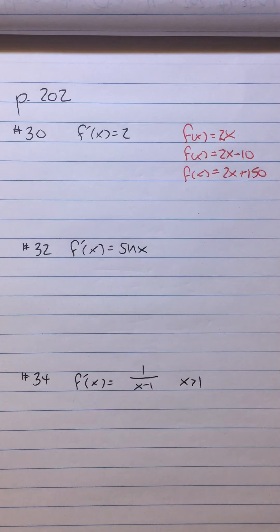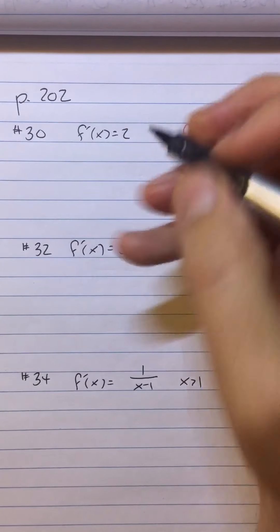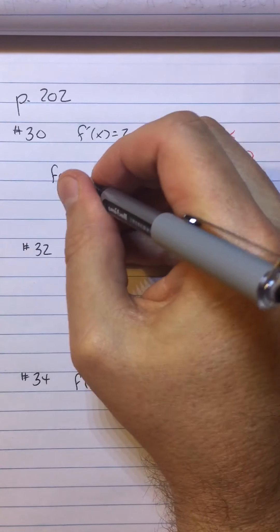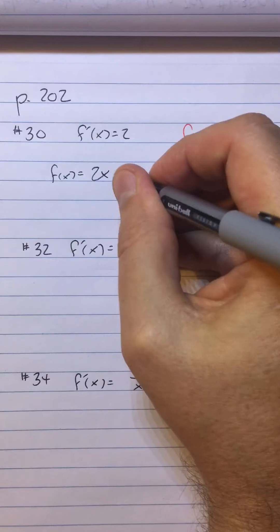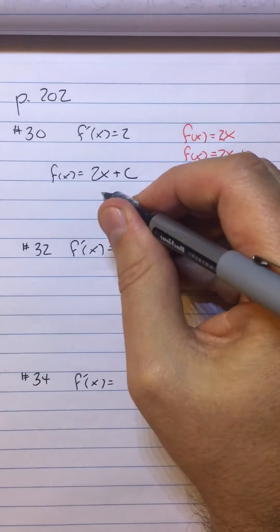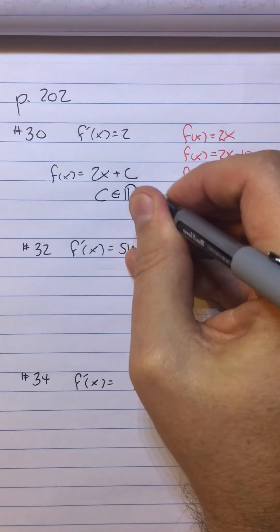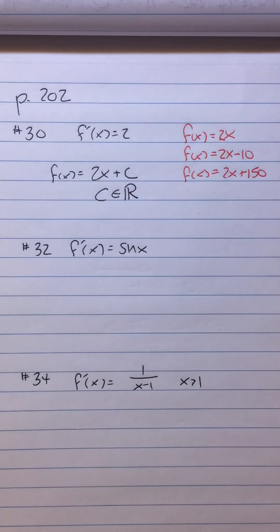Infinitely many. How are we going to express them all, find all possible functions whose derivative of that? We're going to say f of x equals 2x plus c, where c is an element of the real numbers, or c is a real number.